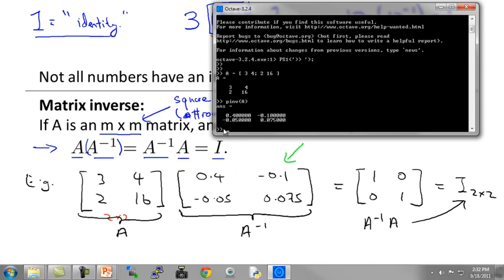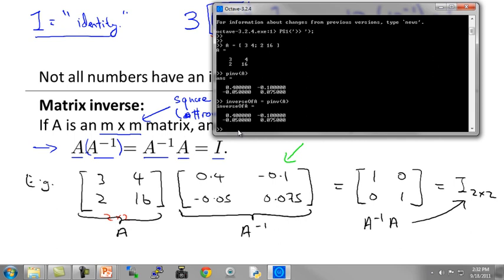And this software lets me compute the inverse of A very easily. I type pinv of A equals this. This matrix here, 0.4, minus 0.1 and so on, has given me a numerical solution to what is the inverse of A. So let me just write inverse of A equals pinv of A. So I've set inverse of A to that.